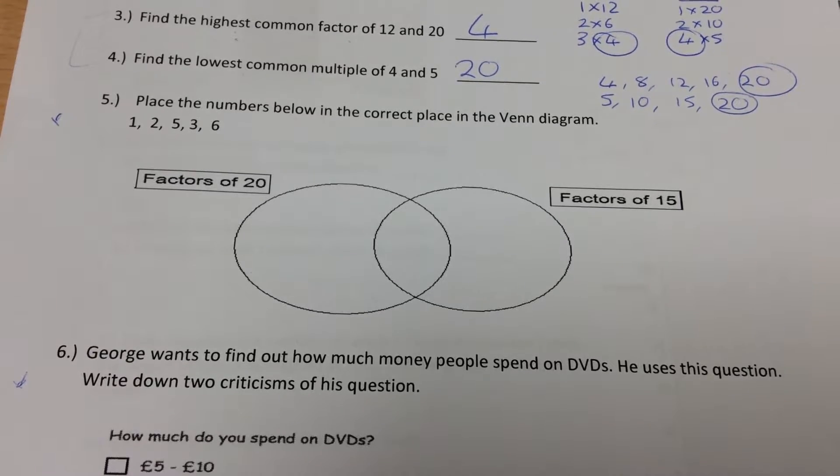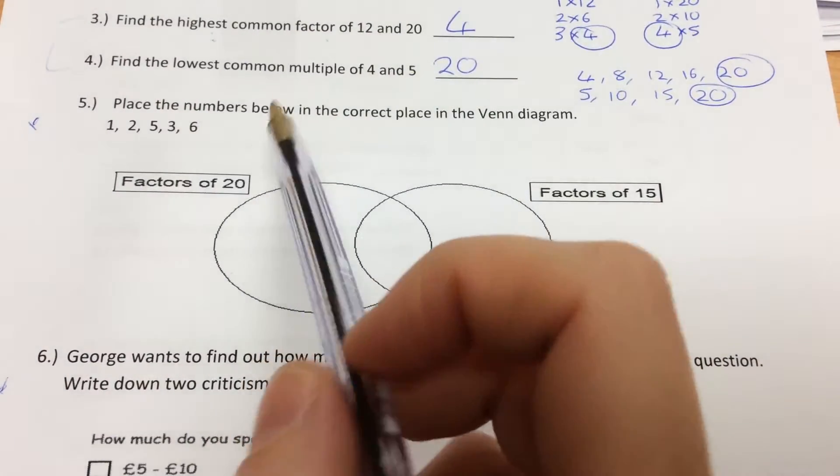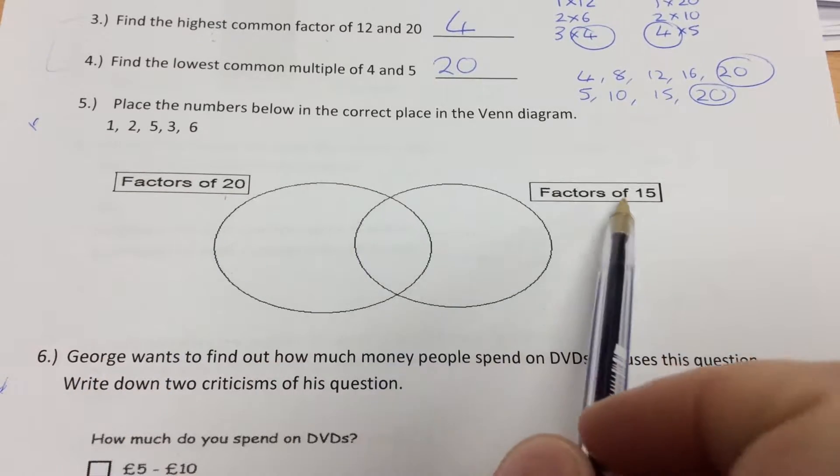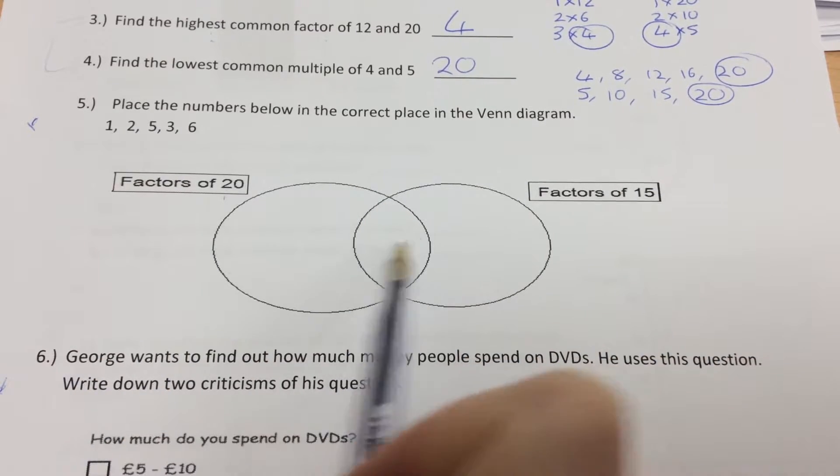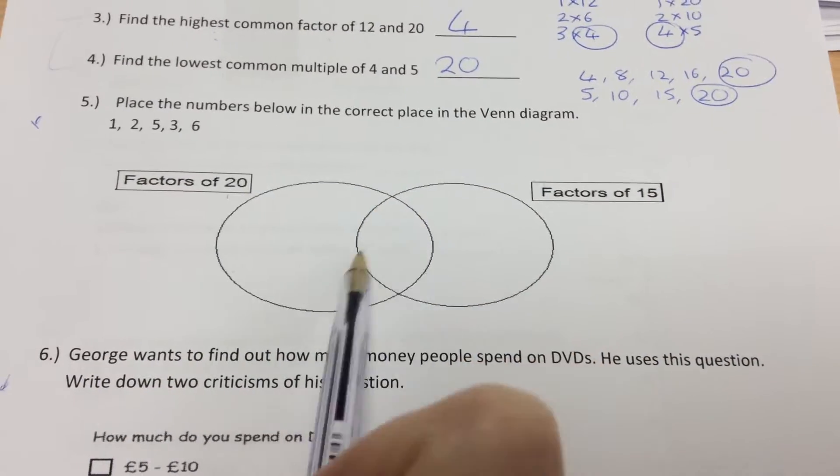OK, my Venn diagram. Again, I'm looking at factors. If it's a factor of 20 and 15, I've got to put it in the intersection where the two circles meet.